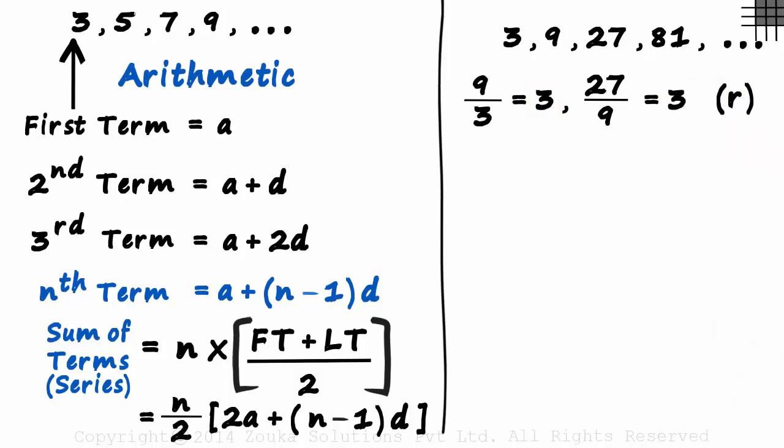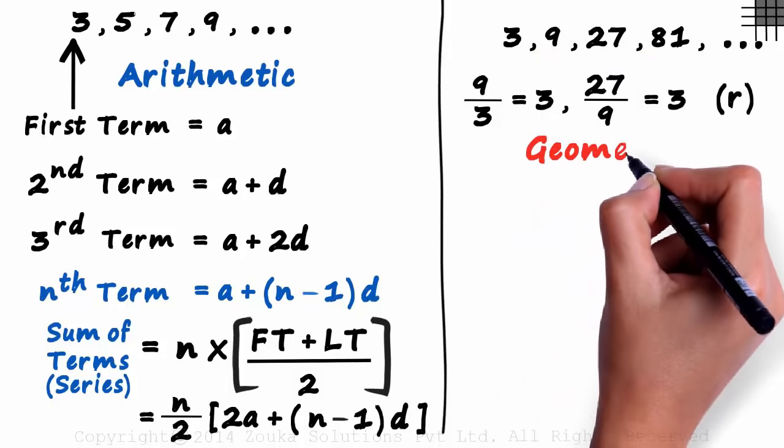We can call it R. Each term is multiplied by 3 to get the next term. This is called a geometric sequence or progression.